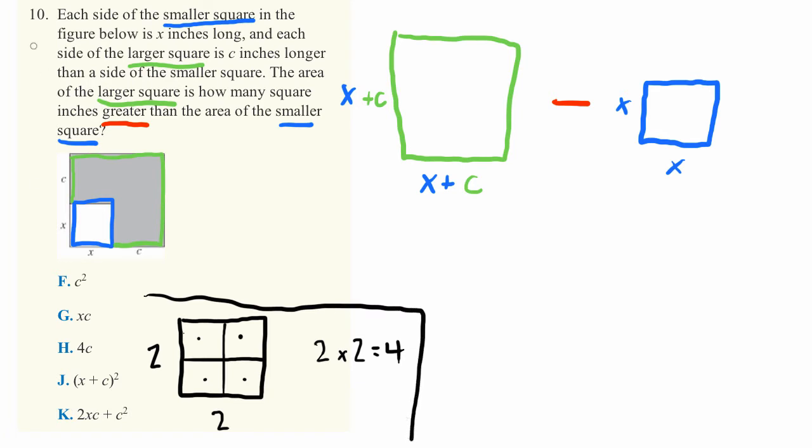There's a second important fact that we're going to need to understand to solve this problem. If we're going to find the area of this square, it's equal to X plus C times X plus C. Let me write in the C's here in the appropriate color, and then we're going to subtract X times X.